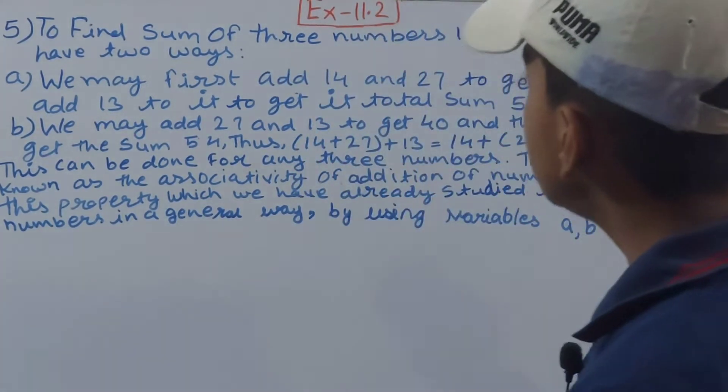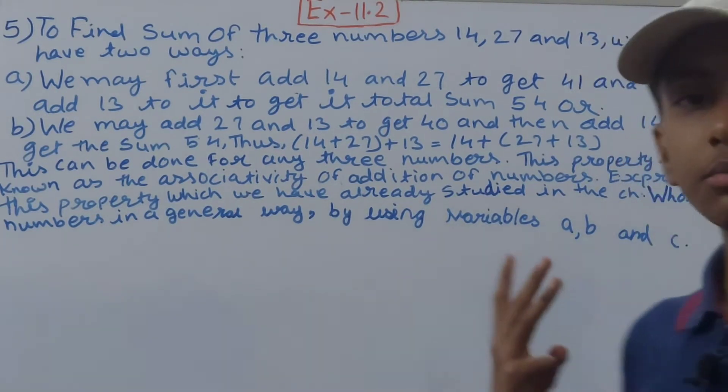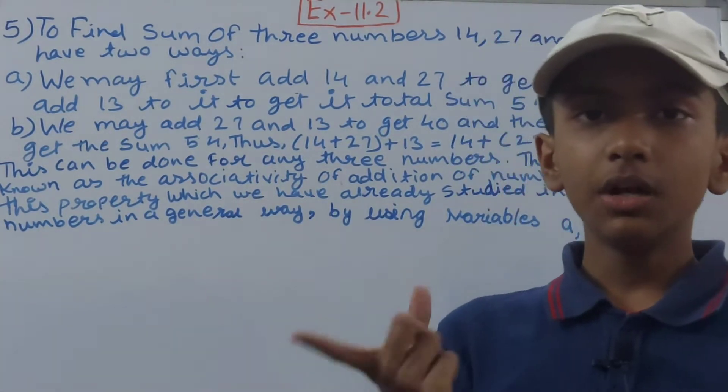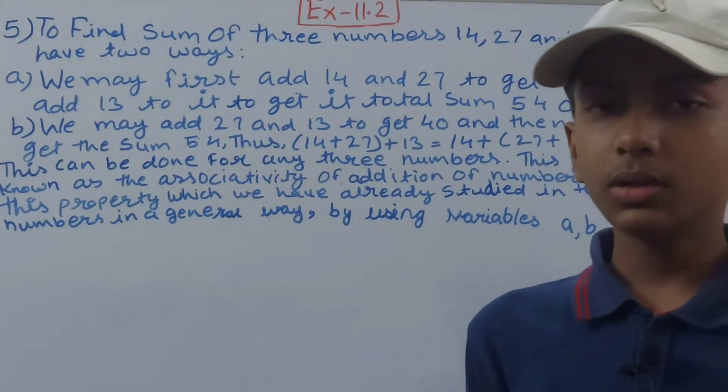This question is to find the sum of three numbers: 14, 27, and 13. We can have two ways. Three numbers are given to us - 14, 27, and 13 - and we have to find their sum. So there can be two ways to find it.